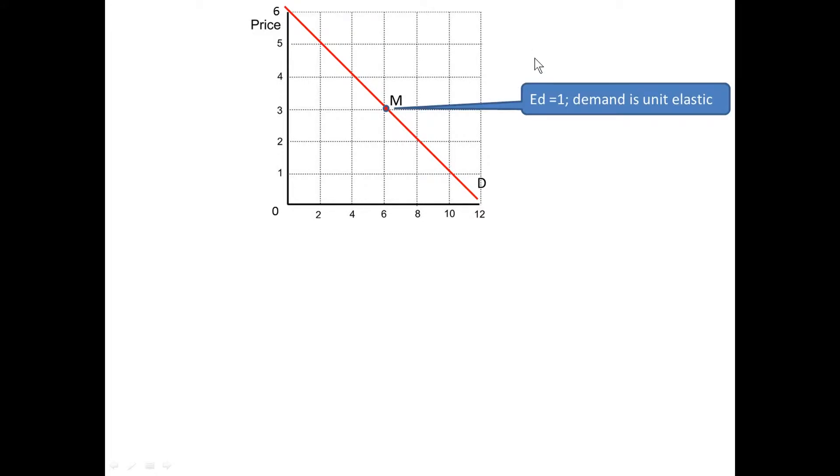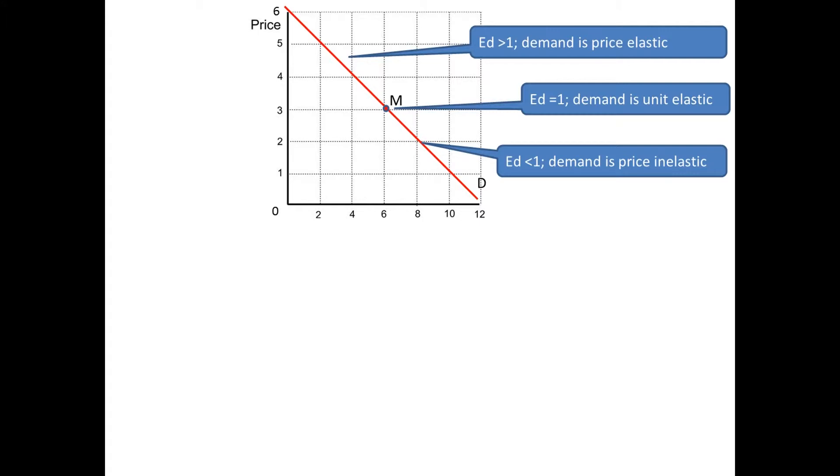At the midpoint, we say that demand is unit elastic. It has a coefficient value of 1, whereas to the left or above the midpoint, we say that demand is price elastic. And to the right of the midpoint, we say that demand is price inelastic.